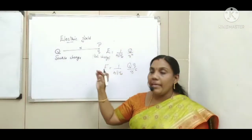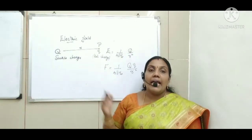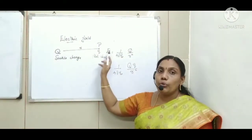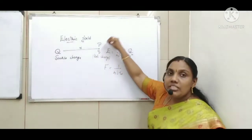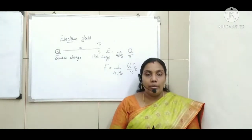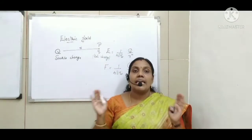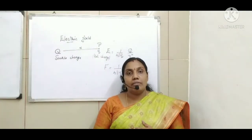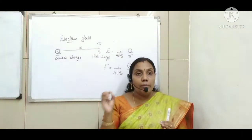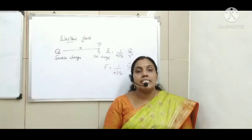If a test charge is placed at point P, there is a force between the source charge and the test charge, given by Coulomb's law: F = 1/(4πε₀) × Qq/R². Now, if the test charge is removed, the force disappears — but the electric field still exists. So there is force only if a test charge is placed, but the electric field always exists around a source charge. That is the difference between electric field and force.